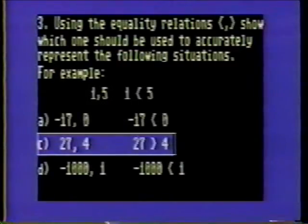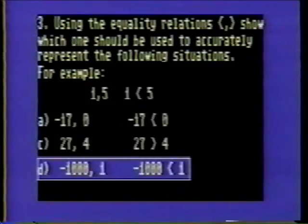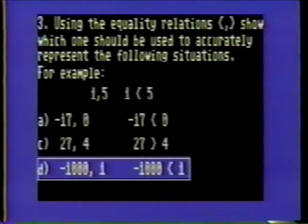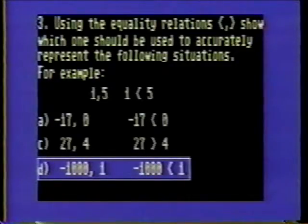In problem 3C, 27 is greater than four. In problem 3D, minus 1,000 is less than positive one because positive one is on the right side of zero.